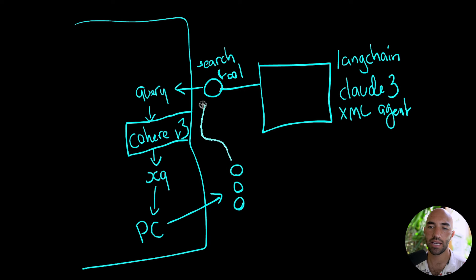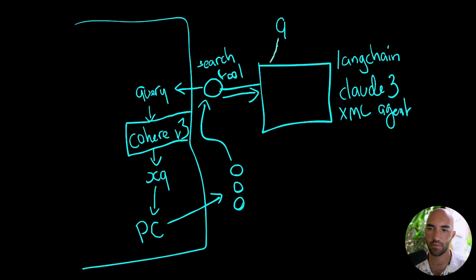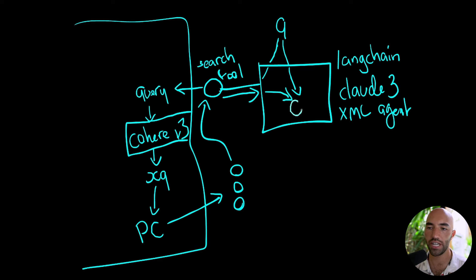Those contexts will be passed back to our search tool, which passes them back to our agent. Then our agent will need to generate a response based on the context and the initial query. This part — the search tool — is the R in RAG (retrieval), and the response generation is the G in RAG (generation).